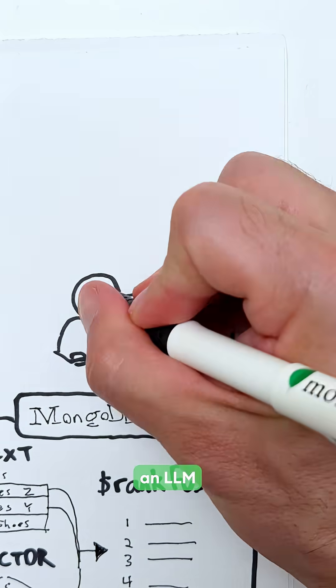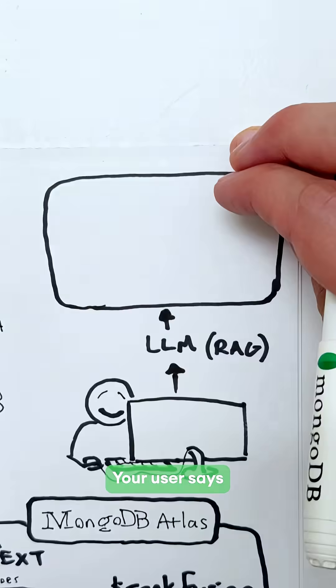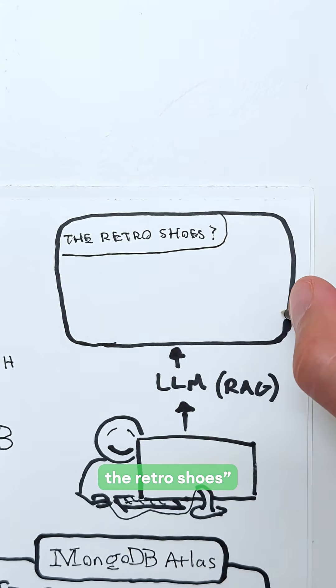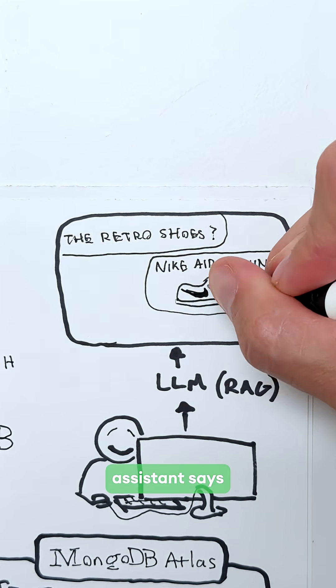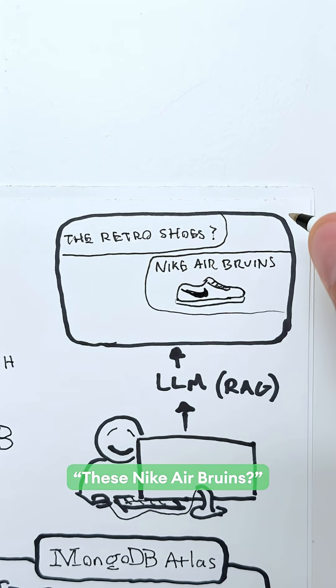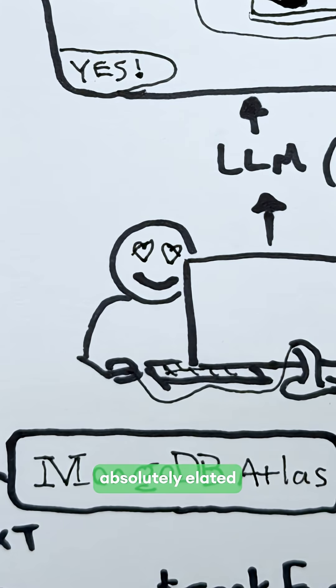Now imagine powering an LLM with results from hybrid search. Your user says 'I actually want the retro shoes.' Your AI-powered assistant says 'these Nike Air Bruins.' Yes — your user is absolutely elated.